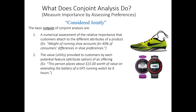Another common output of a conjoint analysis is the value or utility provided to customers by each potential feature or attribute for an offering. Imagine we were designing a GPS sports watch. The results of a conjoint analysis might reveal that a given consumer places about $15 of additional value on extending the battery life of a GPS running watch by an additional six hours. If we knew we could extend battery life at a cost of $10 per watch, and an overwhelming majority of potential customers are willing to pay $15 for that feature, we know that we have a winner.